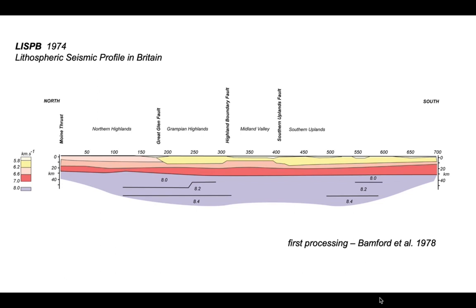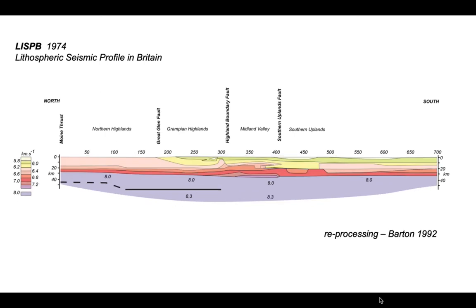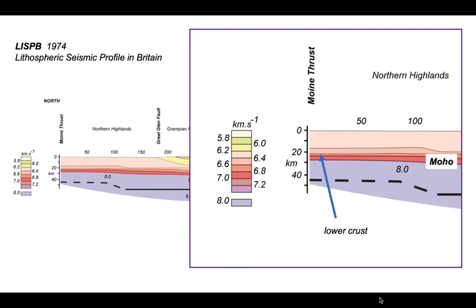With increased computer power, this initial processing was developed into a more elaborate interpretation of the velocity structure. Let's zoom into the left-hand side — the seismic structure in terms of velocities beneath the Northern Highlands. Critically, we can see the Moho, where the seismic velocity jumps from around seven kilometres a second up to eight kilometres a second and into the mantle. That Moho transition occurs at slightly shallower than 30 kilometres — understanding we'll take with us as we look at some of the BIRPS reflection data.